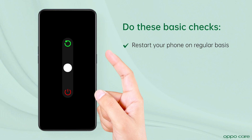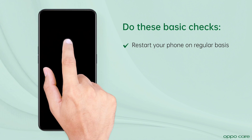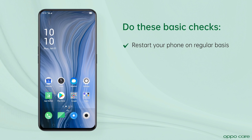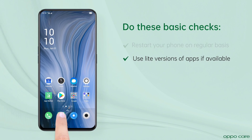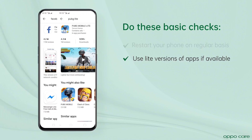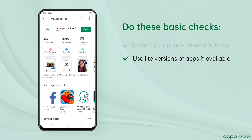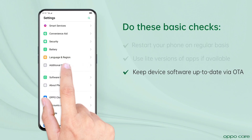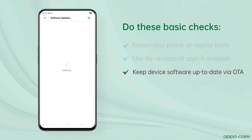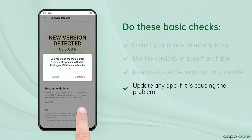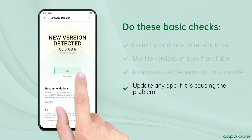Moving on with some basic checks that may help your device work smoothly: restart your phone regularly. If your device has less storage, you can opt to install lite version applications like Facebook Lite, PUBG Lite, Messenger Lite, and YouTube Go. Also keep the device software up-to-date via OTA, or if a particular application is causing the problem, check for updates.